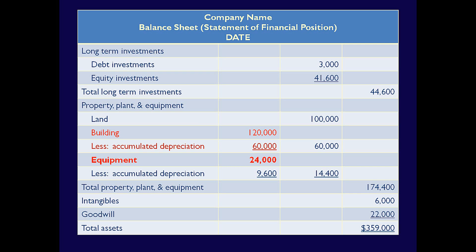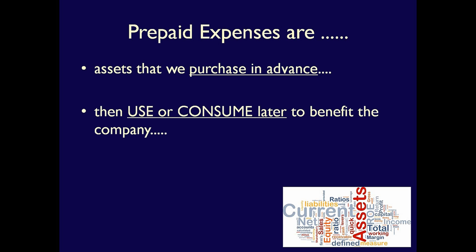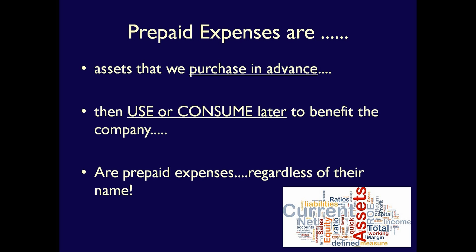We already talked about equipment — it's an asset because we use it in the future to help generate revenue. Like buildings, as we recognize the expense due to usage, we record the accumulated amount in a contra-asset account called accumulated depreciation. Intangibles, such as patents, are also purchased in advance and have future benefit because we use the patented process in our production to generate revenue. As we use the patent over time, it becomes an expense. So we can see that any asset we purchase before we need it and then use up or consume over time to generate revenue is really a prepaid expense, no matter if their name is something like supplies or prepaid insurance.